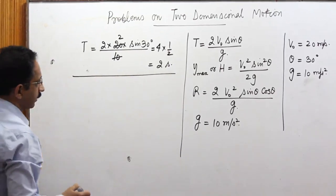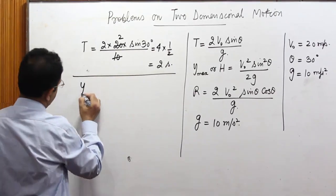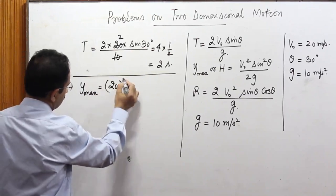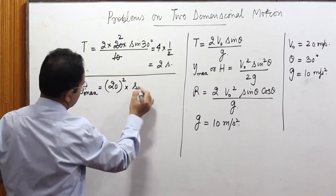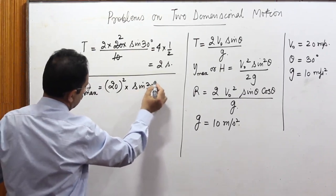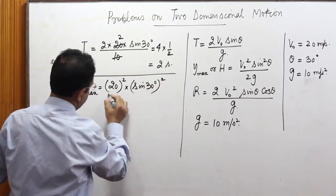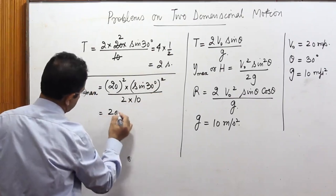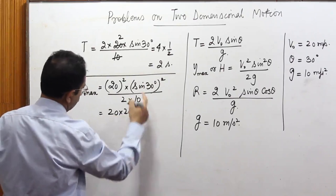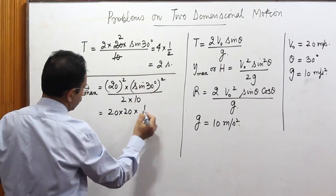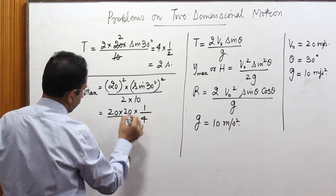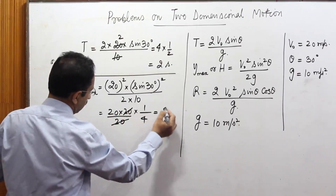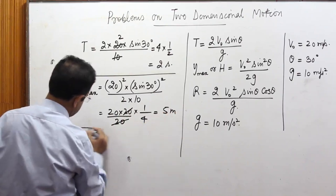Next, we calculate the maximum height. Y maximum = V0² sin² theta / (2G) = 20² × sin² 30° / (2 × 10) = 400 × (1/4) / 20. Since 20 and 20 cancel, the answer is 5 meters.